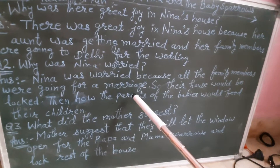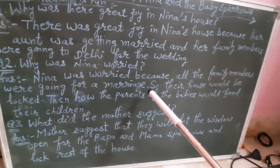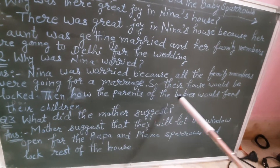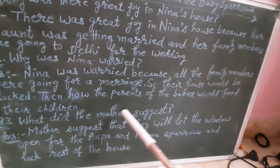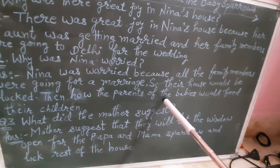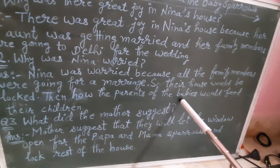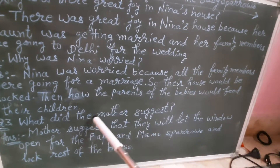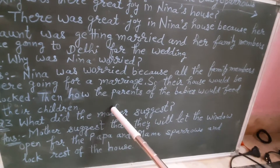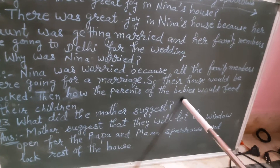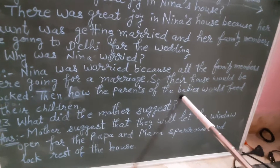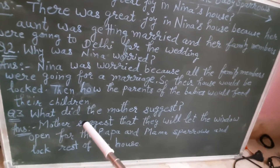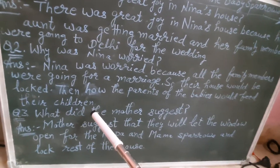So their house would be locked. Unka ghar lock ho jaayega. Then how would the parents of the baby sparrows feed their children? Jo baby sparrows hain, unke parents apne bacho ko kaise khana khilaayenge? Is liye woh chintit thi ki baby sparrows bhukhay reh jaayenge.